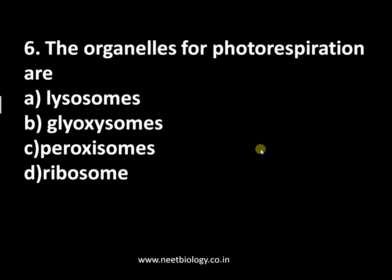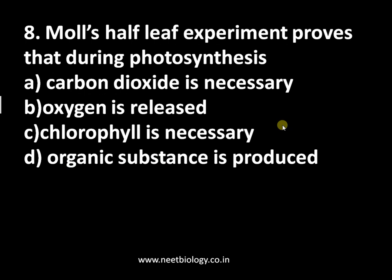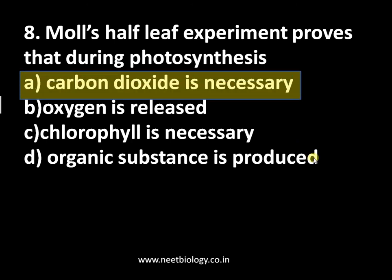Question number six: the organelles for photorespiration — options include lysosomes, glyoxysomes, peroxisomes, and ribosomes. The answer is peroxisome — remember CPM for the organelles involved in photorespiration. Question number eight: Moll's half leaf experiment proves that — A: CO2 is necessary, B: oxygen is necessary, C: chlorophyll is necessary, D: organic substance is produced. Moll's experiment uses KOH solution, and the answer is CO2 is necessary. The experiment associated with oxygen release is the Hill reaction experiment.